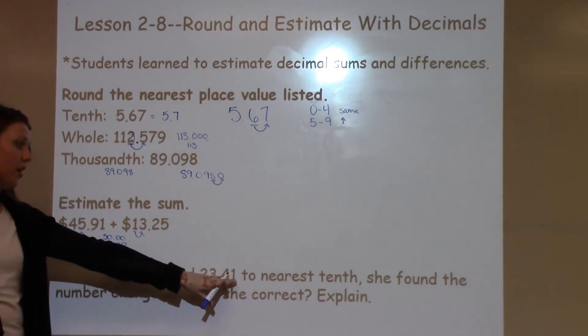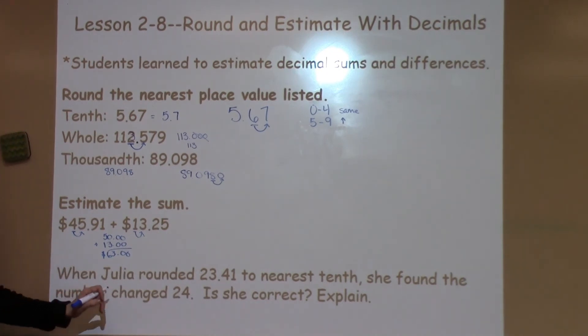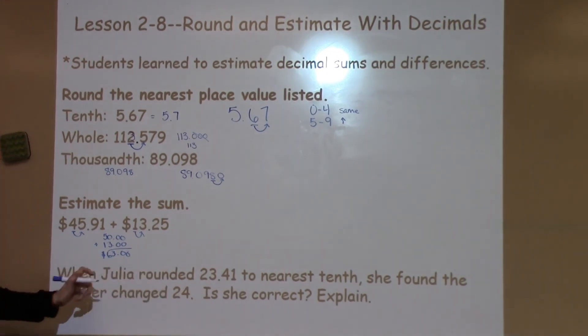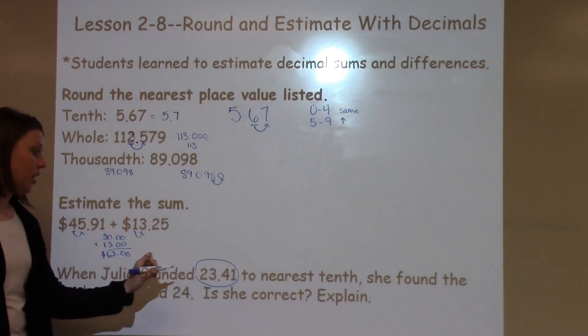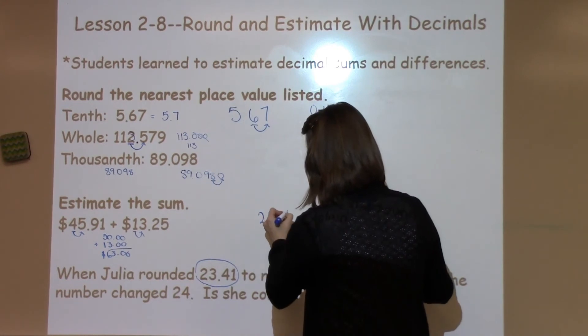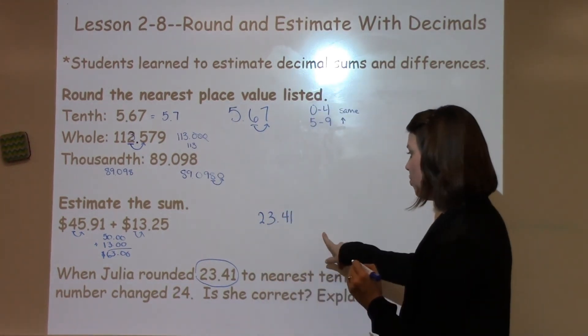When Julia rounded 23.41 to the nearest tenth, she found the number changed to 24. Is she correct? Explain. Well, let's look at this number, 23.41. I'm going to write it over here. Julia thinks the answer is 24.